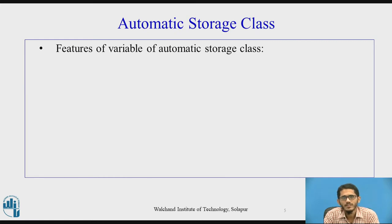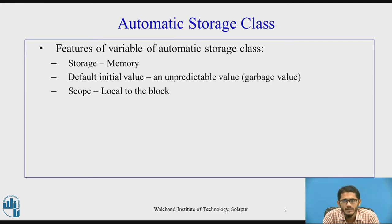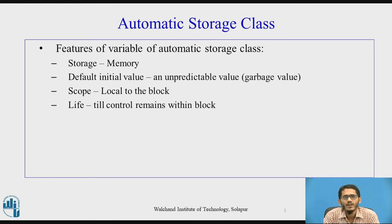A variable declared with the auto storage class has its storage in memory — it is assigned some location in memory. The default initial value is a garbage value, that is, a totally unpredicted value. The scope is local to the block in which the variable is declared, so it can only be accessed within that block. The life of the variable lasts as long as control remains within that block; once control leaves, the variable cannot be accessed.